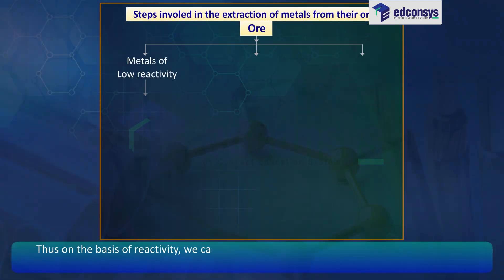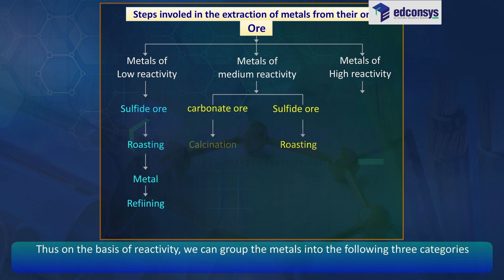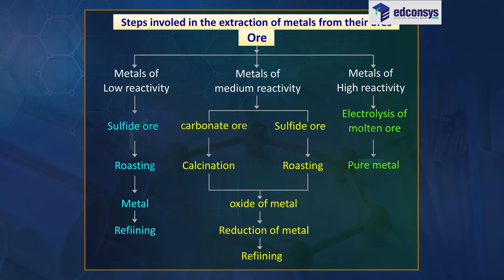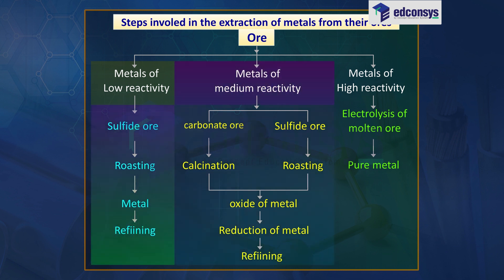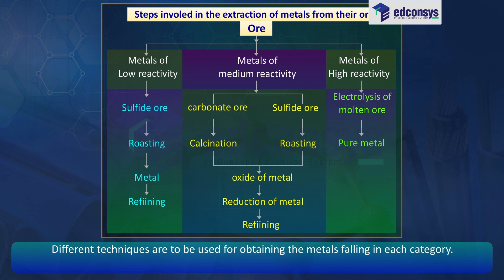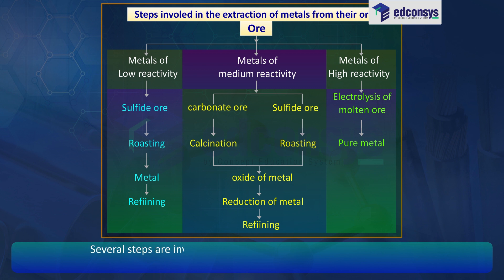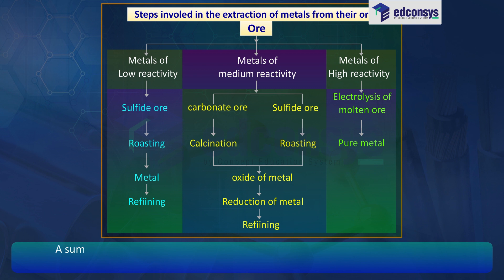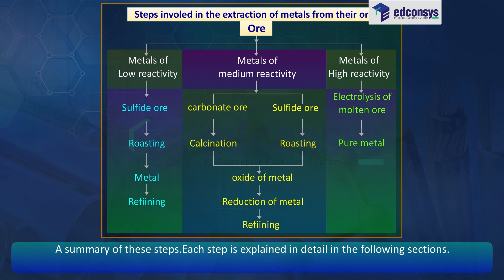Thus, on the basis of reactivity, we can group the metals into three categories: first, metals of low reactivity; second, metals of medium reactivity; third, metals of high reactivity. Different techniques are used for obtaining the metals falling in each category. Several steps are involved in the extraction of pure metal from ores. A summary of these steps is provided, and each step is explained in detail in the following sections.